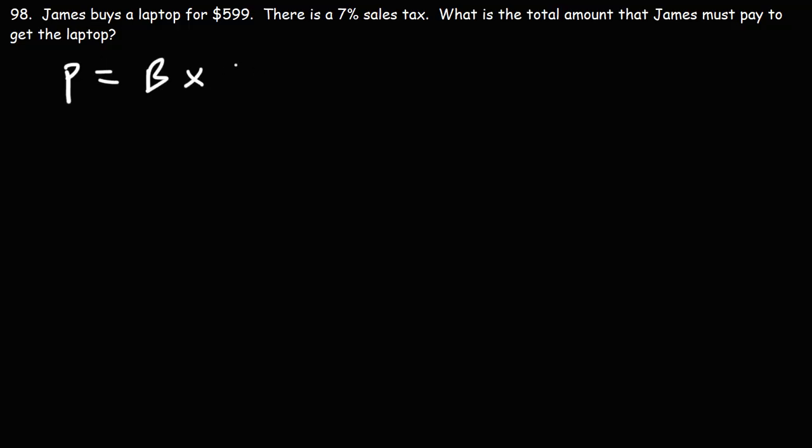If you ask that question, what is the base and what is the rate? We're looking for the part. 7% of 599. So 599 is the base, that's the number associated with the word 'of'. The rate is 7% as a decimal. If you divide 7 by 100, you get 0.07.